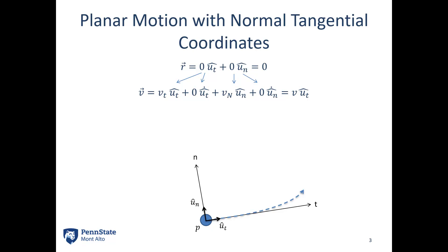To find the acceleration vector, we take the derivative of the velocity vector. Applying the product rule, we get V-dot times UT plus the velocity times the derivative of UT, which is UT-dot. This time UT-dot does not have a zero in front of it anymore, so that's something we need to worry about. So what is the derivative of a unit vector?